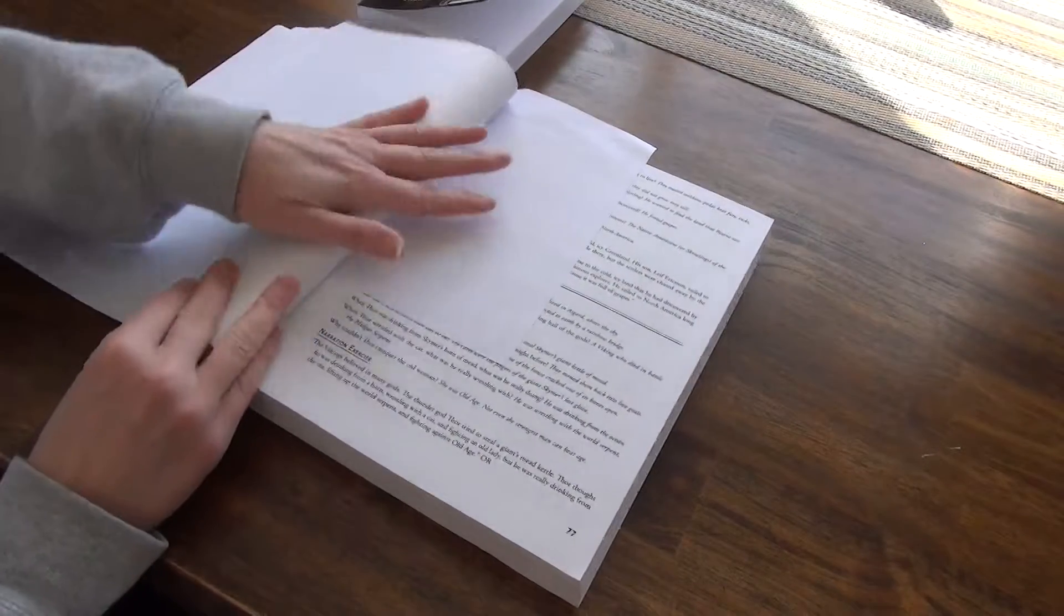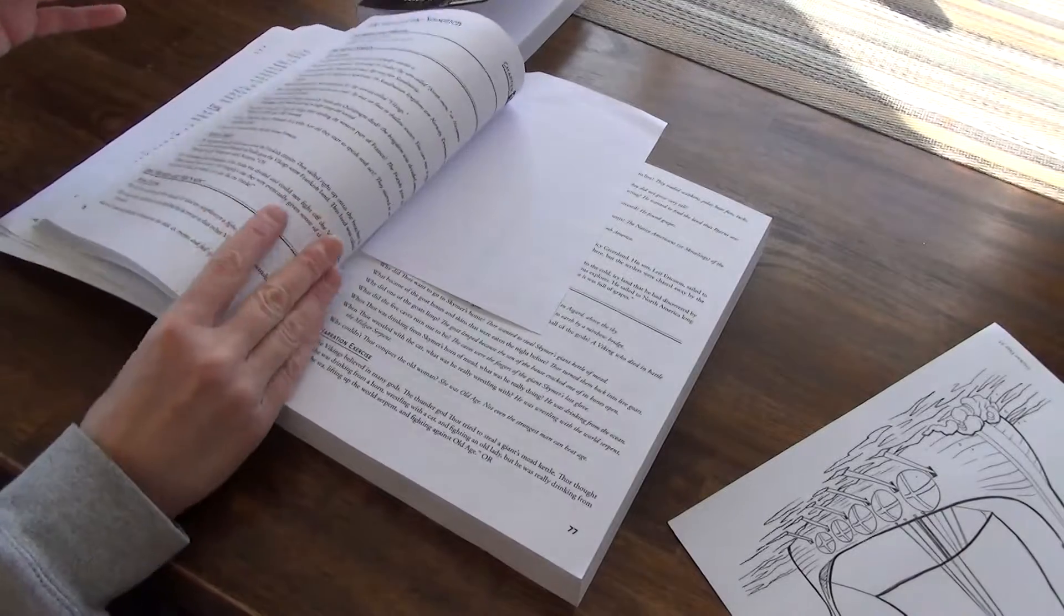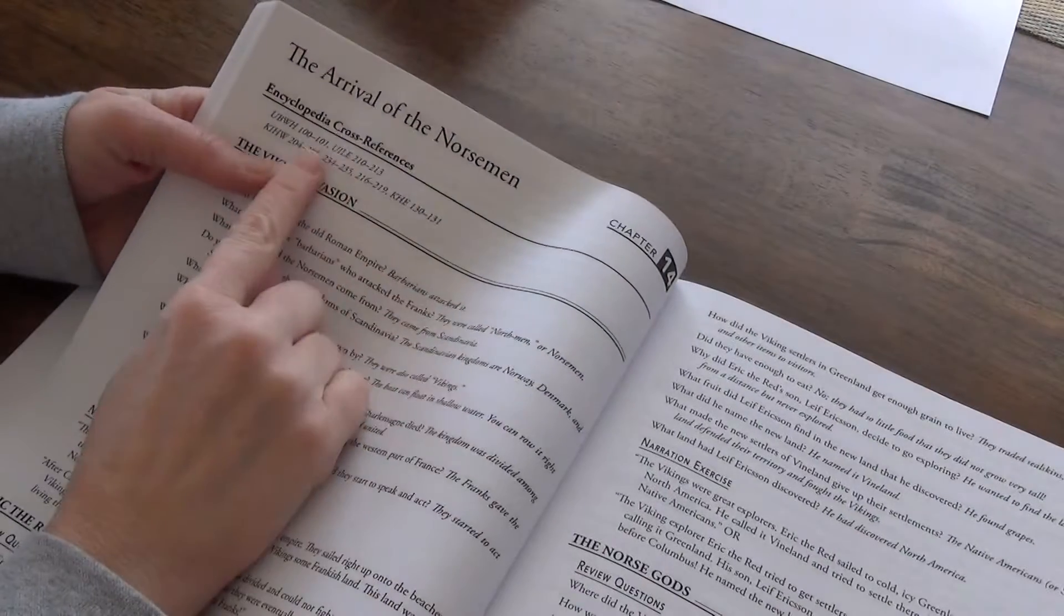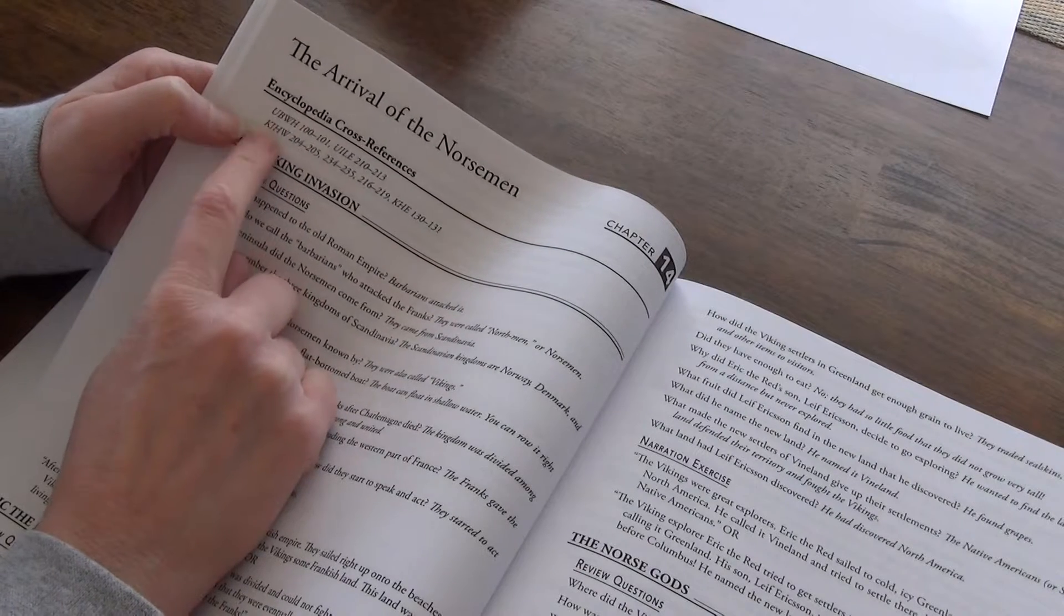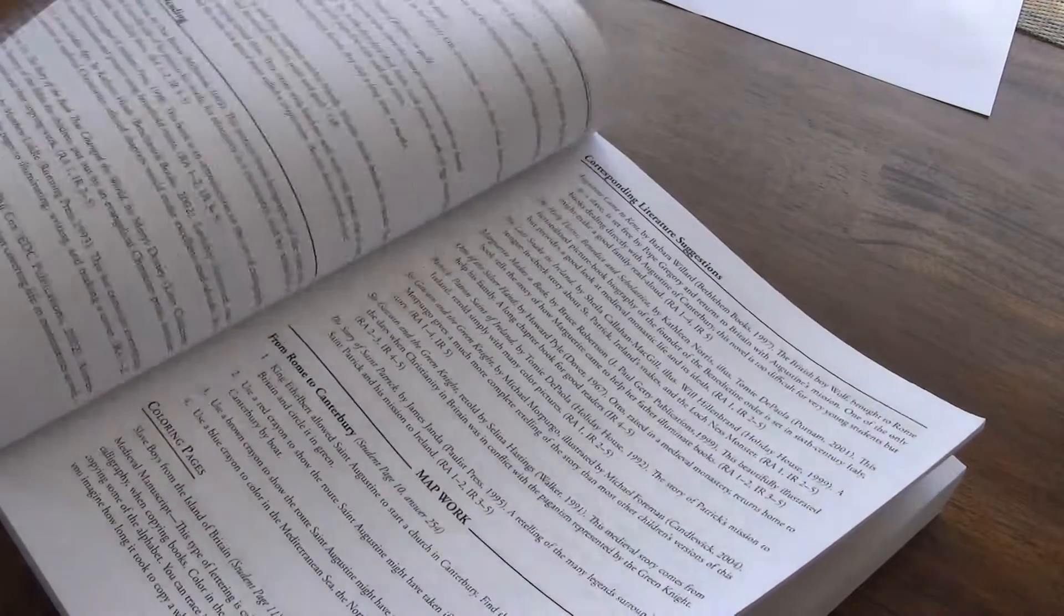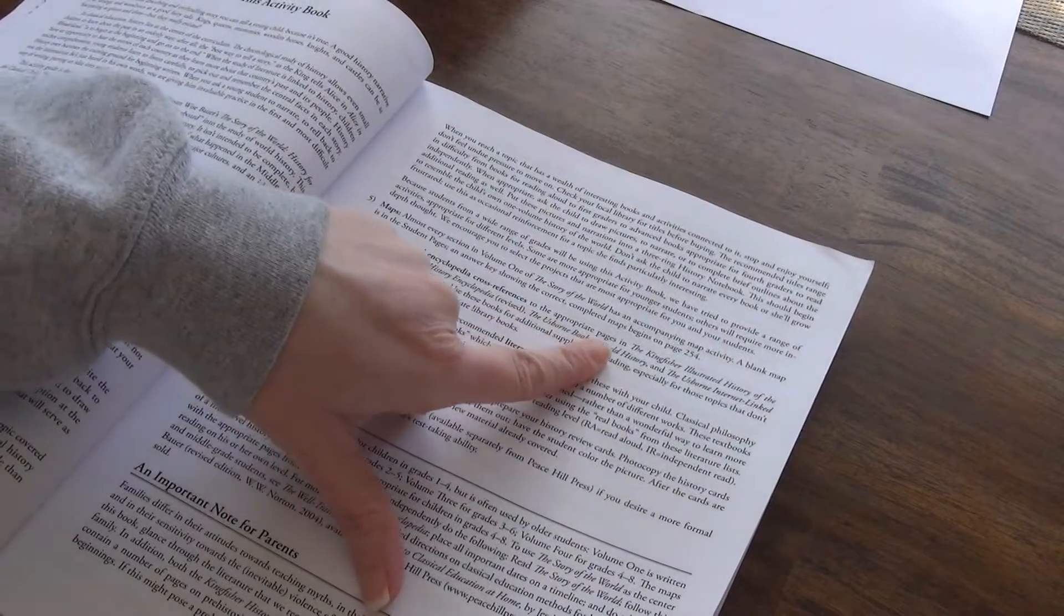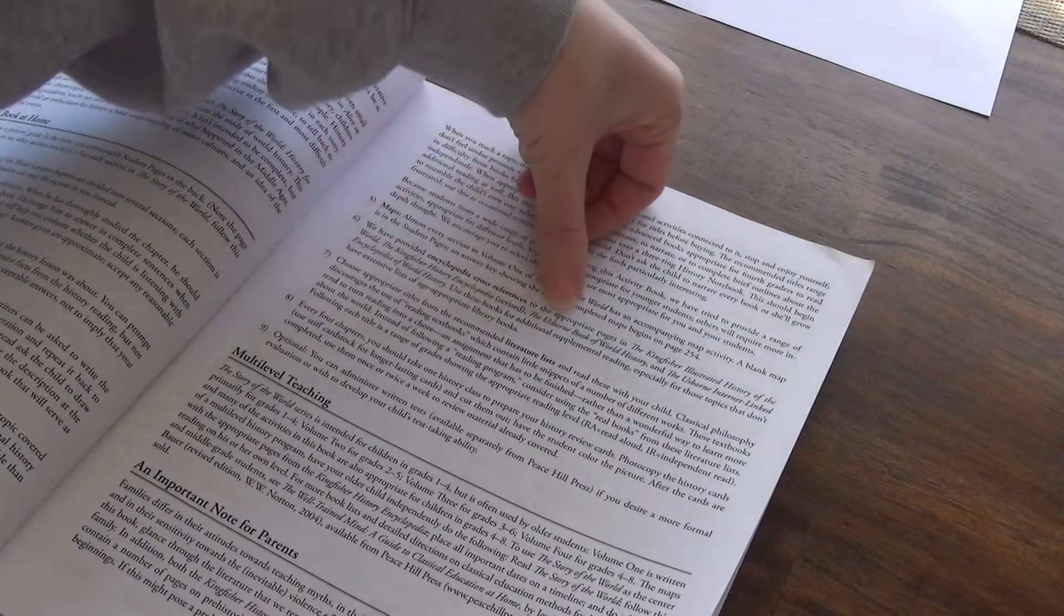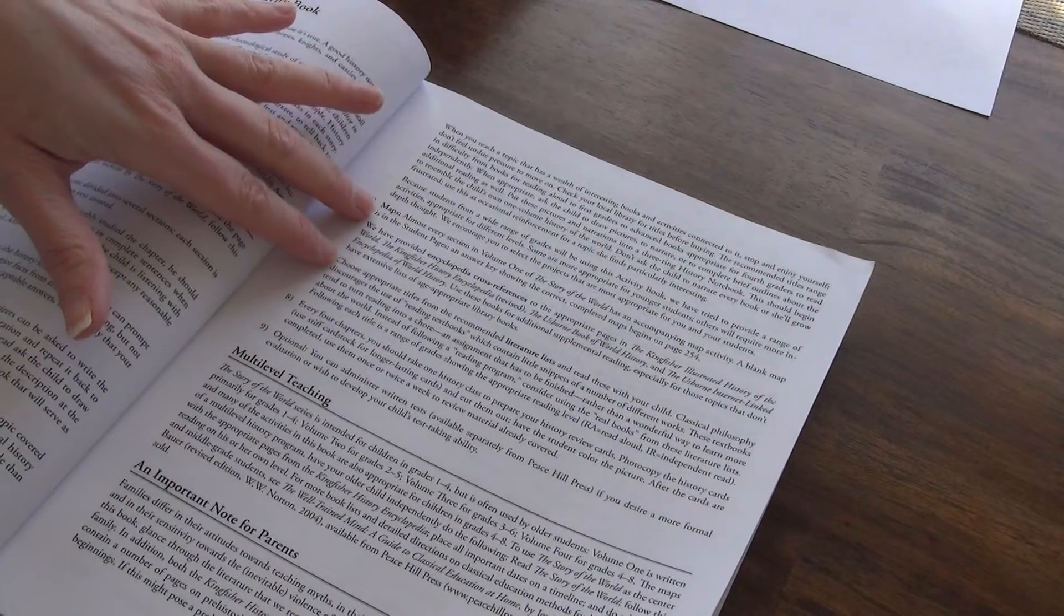So I'm actually just going to go to the one that we have been working on just because I'm very familiar with this one and it's easier to use. Up at the very top here, we have the Encyclopedia Cross References. So we have the Usborne World History and then we have the Kingfisher History here. And it tells you what book and page number.